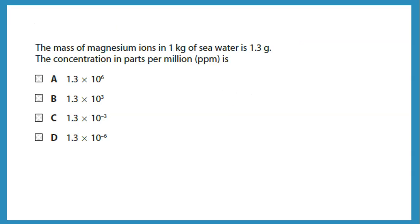Magnesium: the mass of magnesium ions in one kilogram of seawater is 1.3 grams. What is that in parts per million? To get parts per million: 1.3 over 1000 — converting everything to grams — times 10 to the 6. That gives 1.3 times 10 to the 3 parts per million.